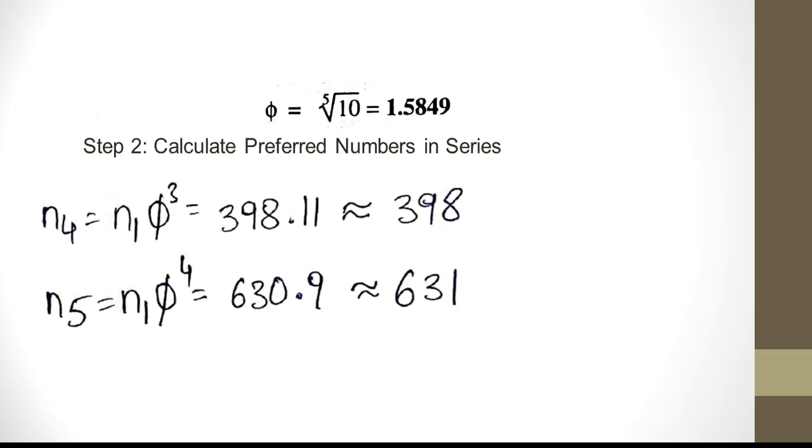n5 is n1 phi raised to 4, which is 100 into 1.5849 raised to 4. n5 turns out to be 630.9. We will round off and make it as 631. Same way, n6 will get number as 1000.